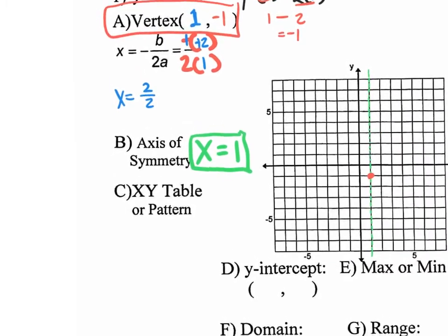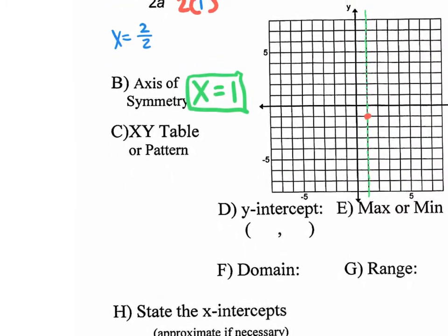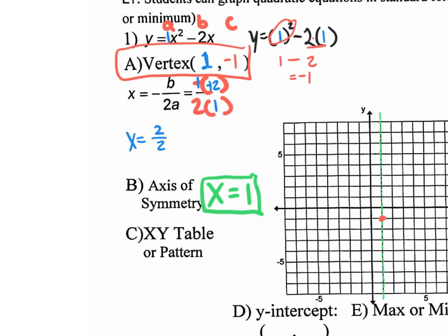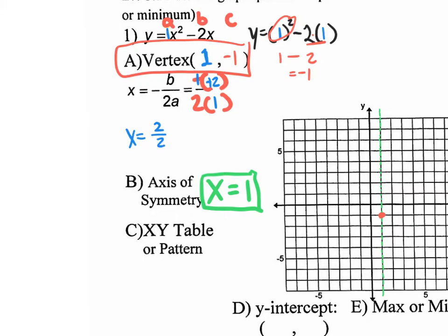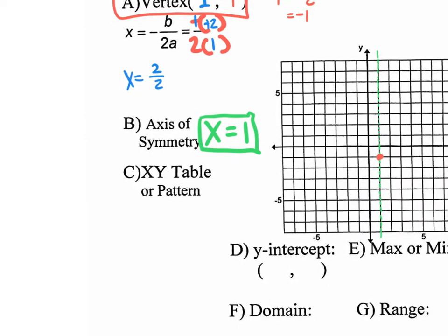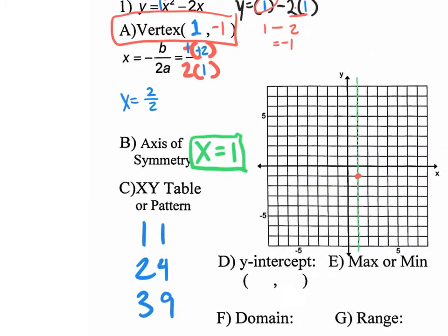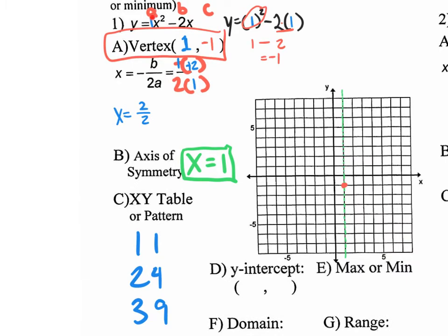You have to be able to write the axis of symmetry equation. Now, the x-y table or pattern — I love using the pattern, especially when my a value is 1. The pattern is 1-1, 2-4, 3-9. We first need to think about whether this parabola is opening up or down. Since the a value is 1, we know it opens up. From the vertex, go 1 over and 1 up. Then go back to the vertex for 2-4: go 2 over and 4 up. And last, go back to the vertex for 3-9: go 3 over and 9 up.